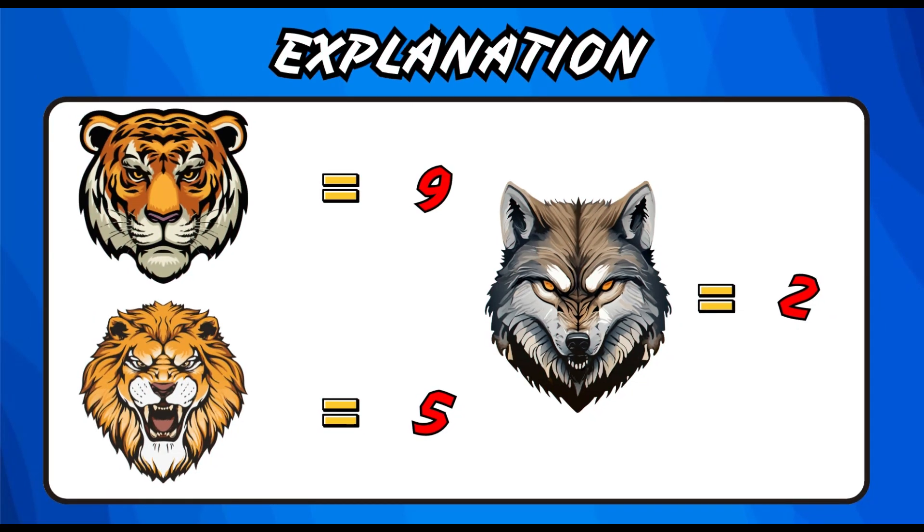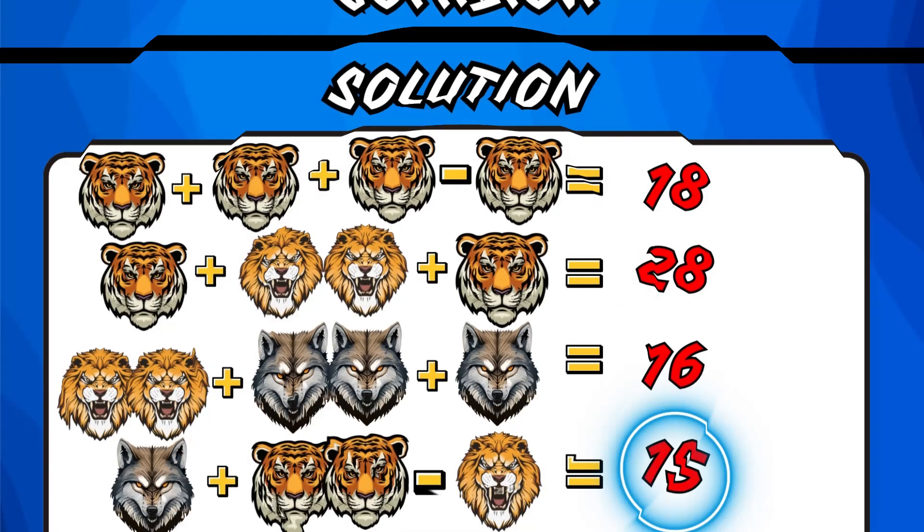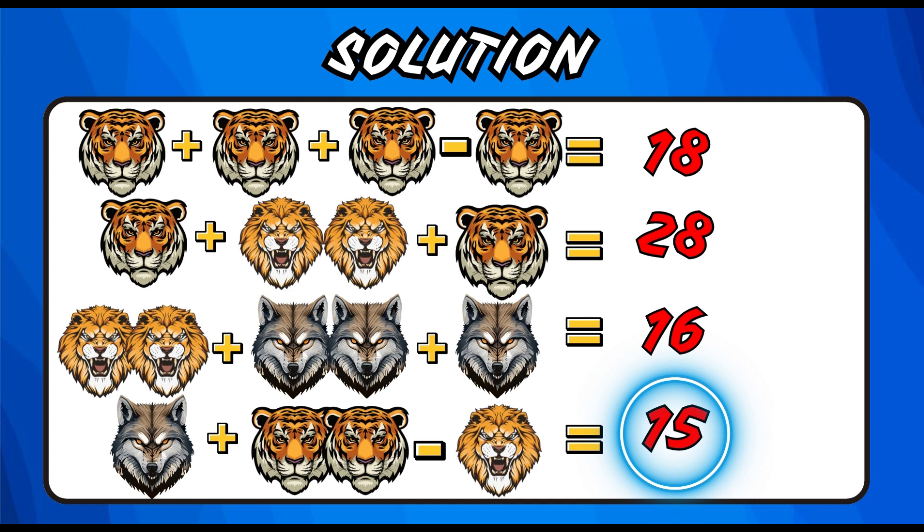Can't solve it? Let me help you. A tiger takes up the value of 9, 5 for the lion, and 2 for the wolf. So, the equation becomes 2 plus 18 minus 5. Therefore, you get the answer as 15.